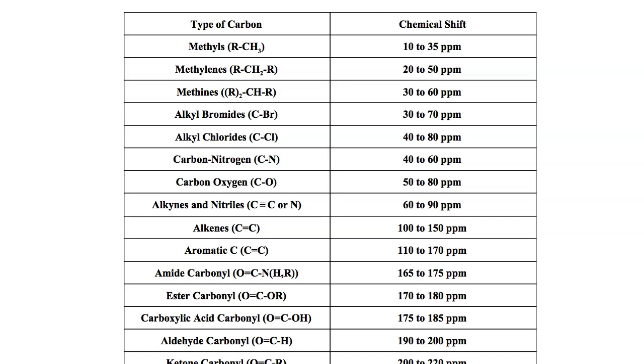Once you start putting on more electron withdrawing groups, such as the halides, the oxygens, the nitrogens, you're going to see a shift even further upwards in terms of ppm. Once some of that deshielding occurs, we see that the bromides and the chlorides usually hang somewhere between 30 to 80 ppm. The carbons associated with nitrogen and oxygen go from about 40 to 80. Once you go primarily past the 40 mark and you start heading up towards 80, that's when you're looking at carbons that most likely have some electron withdrawing behavior nearby. There's some deshielding that's starting to occur in your carbons.